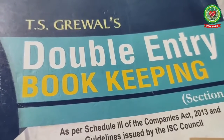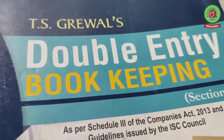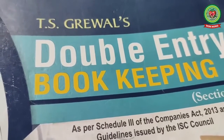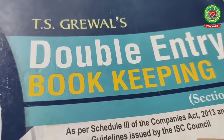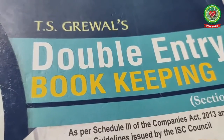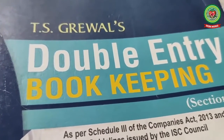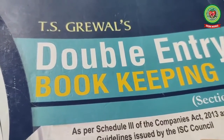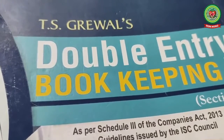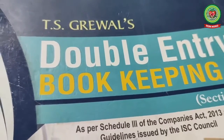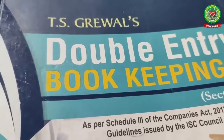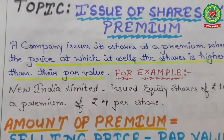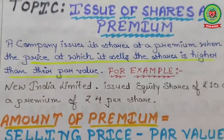Good morning students. It's time for your accounts class. From your book, we have already started one chapter named 'Issue of Shares.' Under issue of shares, we started one topic named 'Forfeiture of Shares.' Today's topic is also forfeiture of shares but along with the premium. So for your revision, first of all, see what is the provision again when issue of shares at a premium.